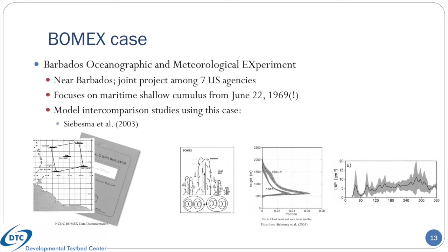The fifth supported case is from the Barbados Oceanographic and Meteorological Experiment, or BOMEX, whose data is now over 50 years old. The field campaign took place near Barbados in the Lesser Antilles of the Caribbean Sea and was a joint project amongst seven U.S. agencies. It features shallow, non-precipitating cumulus over the ocean from June 22, 1969. The low cloud fraction can be a challenge for physics suites designed for large horizontal grid sizes. A particularly relevant model intercomparison can be found in a paper by Siebesma and co-authors from 2003.